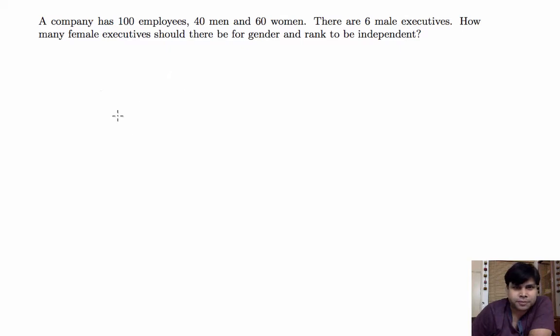Let M be the event that the randomly selected employee is a man. We know that probability of M is 0.4. We also know that probability of W is 0.6, so W is the event the randomly selected employee is a woman.